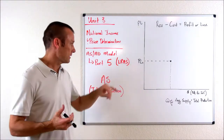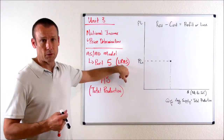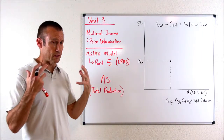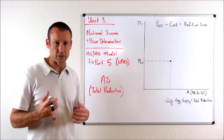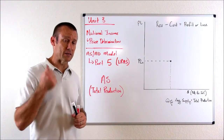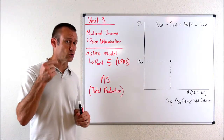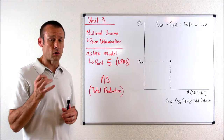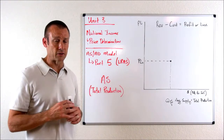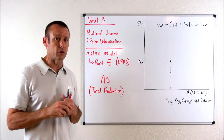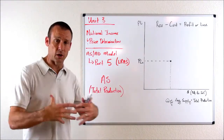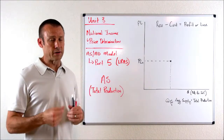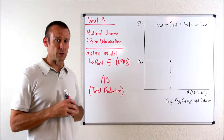This is Part Five. Here we're going to talk about the LRAS. I'm going to talk about AS in general — AS for the total production line. I'm going to talk about the two types: the SRAS, short run aggregate supply curve, and the LRAS, the long run aggregate supply curve. These two curves are both total production curves, but they're different. Why are they different? Well, that's what this video is all about.